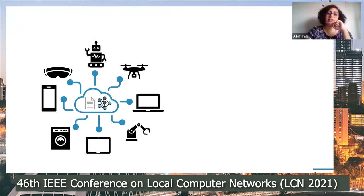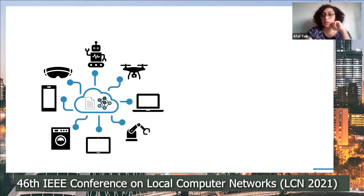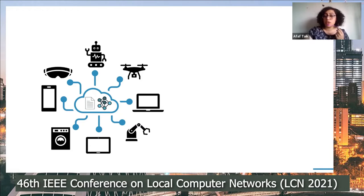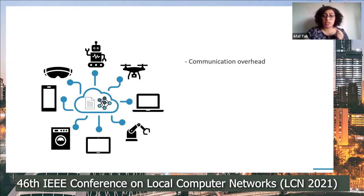Nowadays, data generated by connected devices and smart applications are all sent to the cloud to be further processed and analyzed. This analysis is essential to build powerful models for better quality of service, predictions, recommendations, and to detect anomalies. But the growing number of devices and applications will soon overwhelm wireless networks and cloud infrastructure, creating huge communication overhead and requiring high computation power and large storage facilities, which entails high energy consumption.